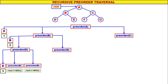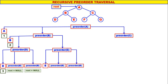Let us come to pre-order of E. E is not equal to null, therefore display E. Left of E is null, therefore pre-order of null. Right of E is null, therefore pre-order of null. E will be the fourth one to be displayed. Pre-order of null: root is null, nothing happens.